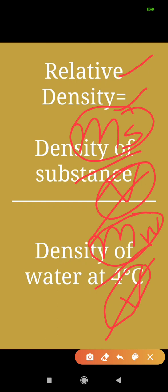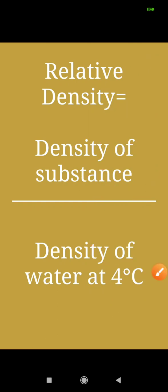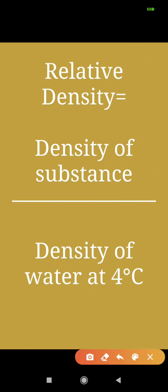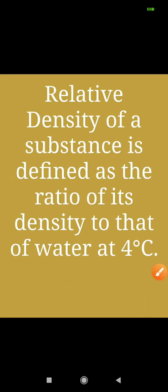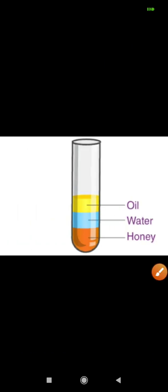The condition is that volume should be equal. If the mass of the substance is more, relative density will be more; if less, relative density will be less. Relative density is also known by another name — specific gravity.